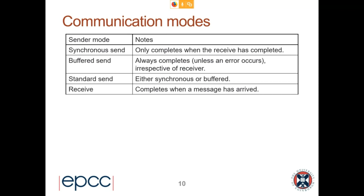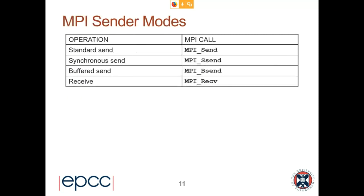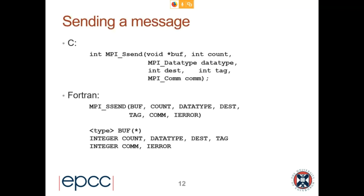When a process posts its MPI_Recv, it will wait and will not move on from that function call until it has received the message. Here are the calls for the various modes: the standard send is MPI_Send — don't use that. The synchronous send is MPI_Ssend — do use that. There's a buffered send MPI_Bsend, which is asynchronous blocking. And MPI_Recv.